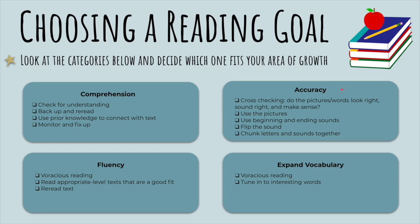There's also the category of accuracy, where a lot of your goals might come from this month of September. Accuracy includes strategies like cross-checking — do the pictures or words look right, sound right, and make sense? You might also work on using pictures when figuring out tricky words, using beginning and ending sounds, or flipping the sound especially of vowels and trying out the different vowel sounds you know. Or you might work on chunking letters and sounds together to figure out longer words.